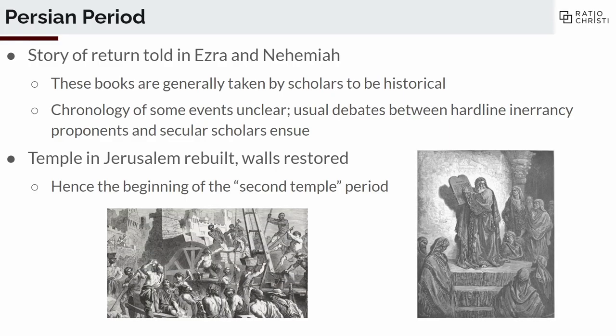Here's the Persian period — the story of return told in the books of Ezra and Nehemiah. Scholars generally take these books to be a historical source — this isn't an issue like the Exodus where there's a whole lot of debate over whether there was any history at all. However, the chronology of some events is really not clear. Sometimes in the books the walls of Jerusalem are there, sometimes they're not, and then they want to rebuild the walls — so you get a very confused and muddled chronology that's hard to work out.